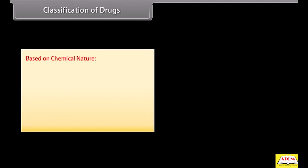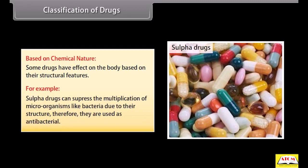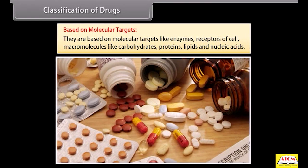Based on chemical nature, some drugs have effects on the body based on their structural features. For example, sulphur drugs can suppress the multiplication of microorganisms like bacteria due to their structure; therefore they are used as antibacterial agents. Based on molecular targets, drugs act on targets like enzymes, receptors of cells, and macromolecules like carbohydrates, proteins, lipids and nucleic acids.